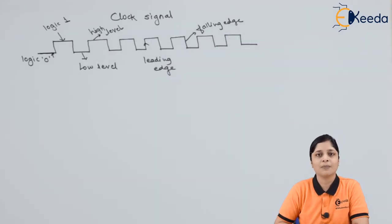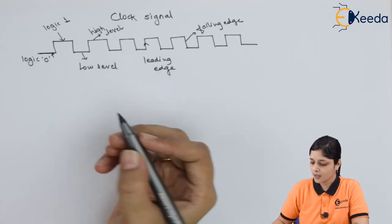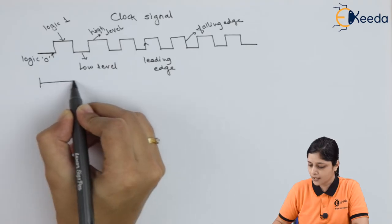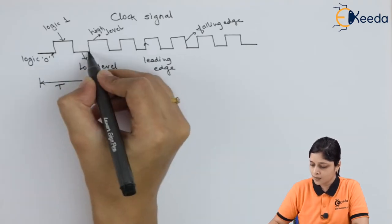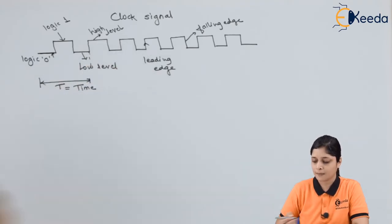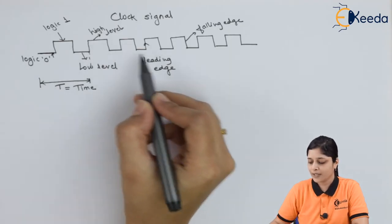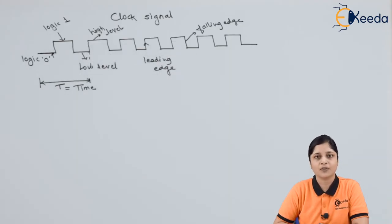The clock signal we are going to apply to the sequential circuit must have 50% duty cycle, meaning for 50% of time it should be on and for 50% of time it should be off. Suppose this is your total time T. In this way, you have to apply the clock signals with equal intervals of time.